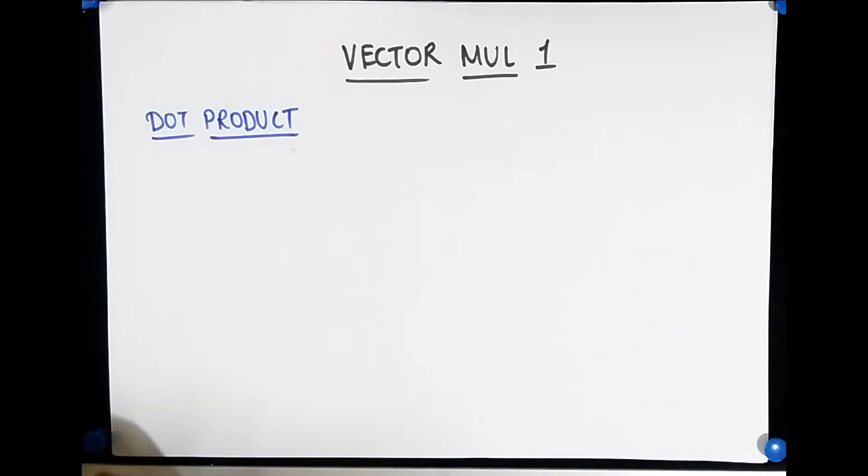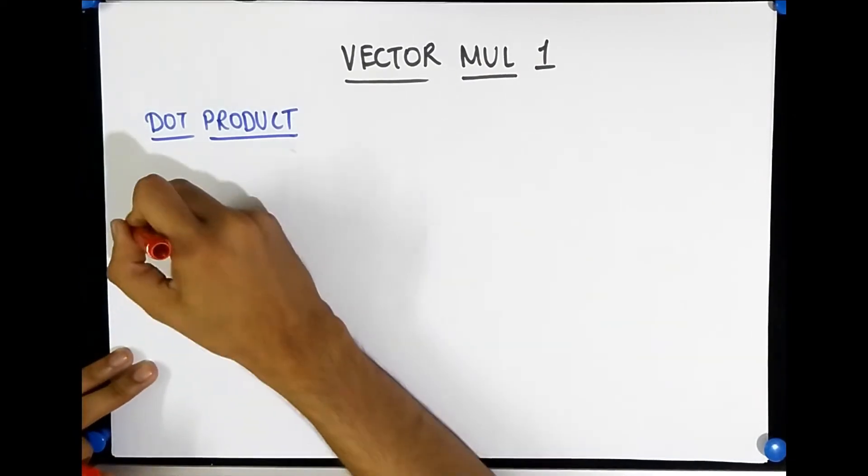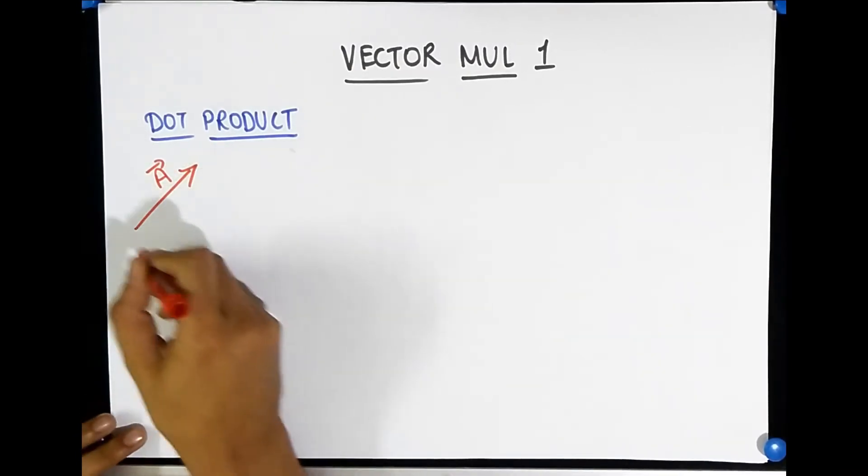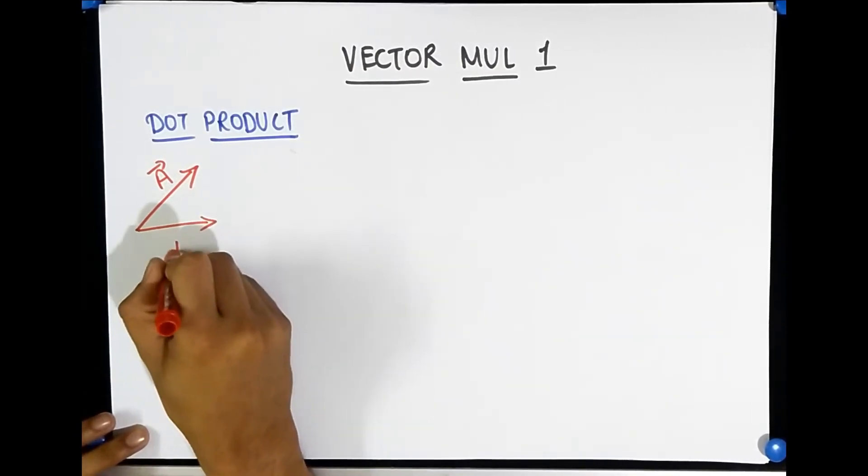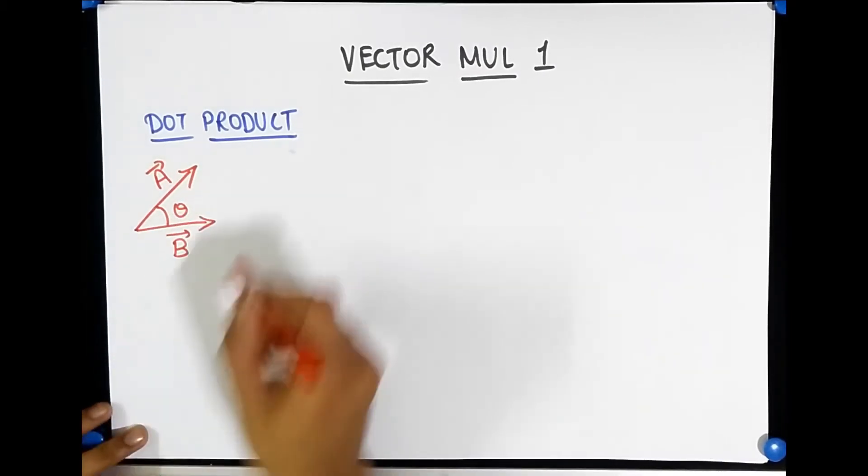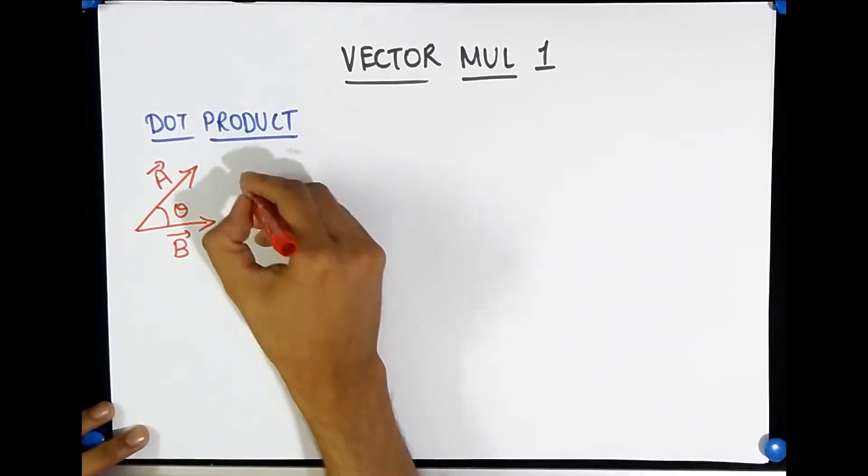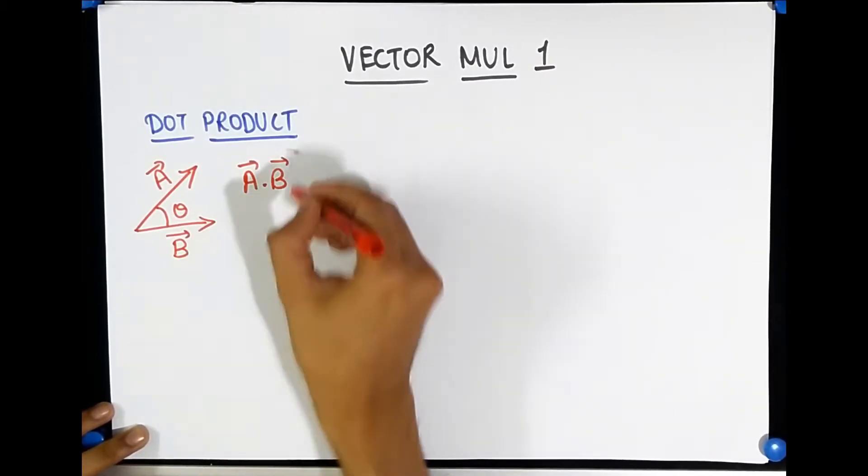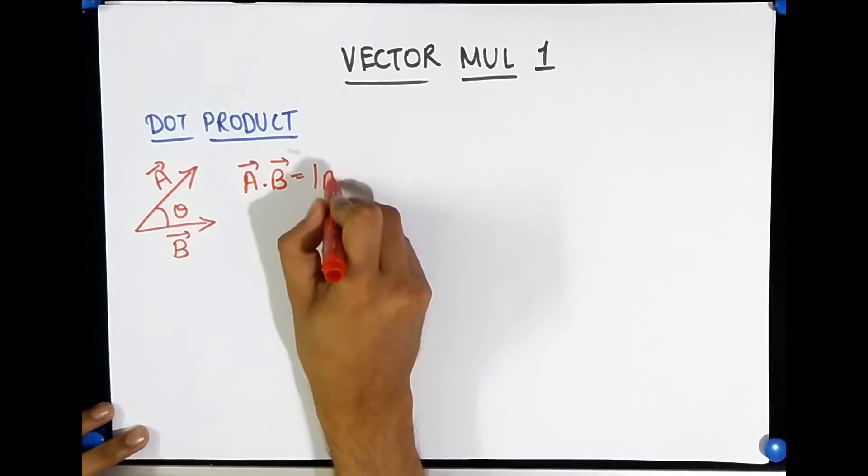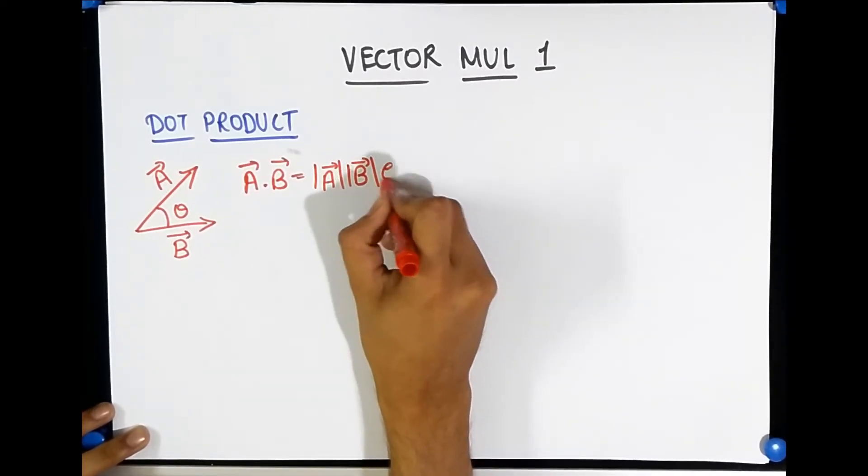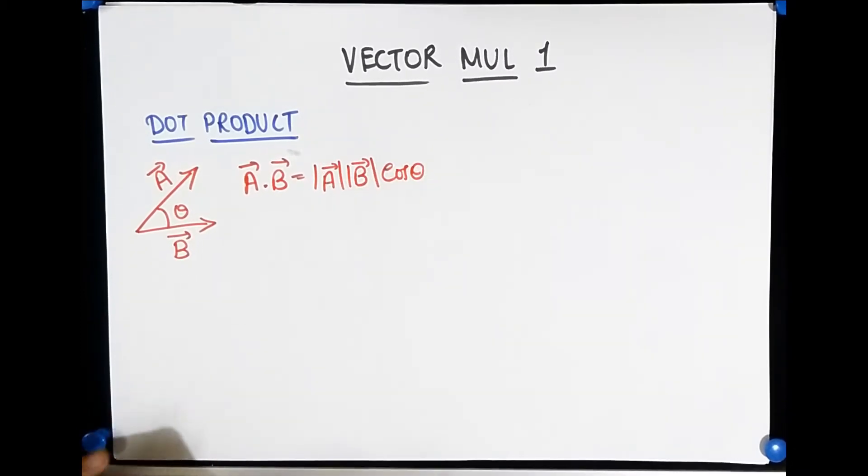Let us define what a dot product is. Look, suppose you have two vectors, vector A which is along this direction, and you have vector B which is this way, and let's say the angle between them is theta. We define dot product A dot B, that's why it's called dot because you put a dot over there, as the magnitude of A multiplied by the magnitude of B into cos of the angle theta between them.